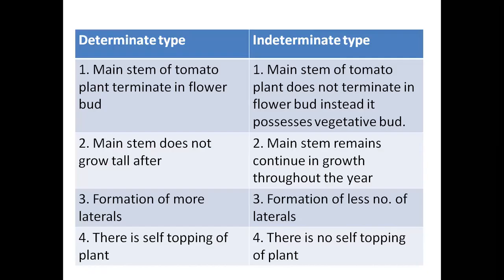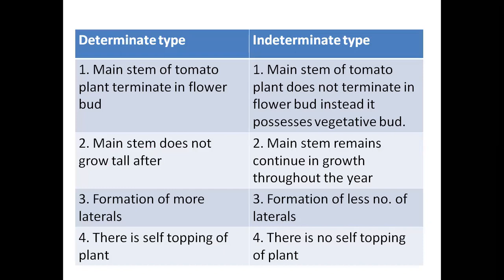Determinate types of tomato: the main stem terminates with a flower, meaning when a flower comes, vegetative growth stops there — it ends with a flower. The height stops at that point. Indeterminate types have flower buds in the axils at every alternate node, and the main stem does not grow taller because when reproduction starts at the terminal part, vegetative growth ends there.